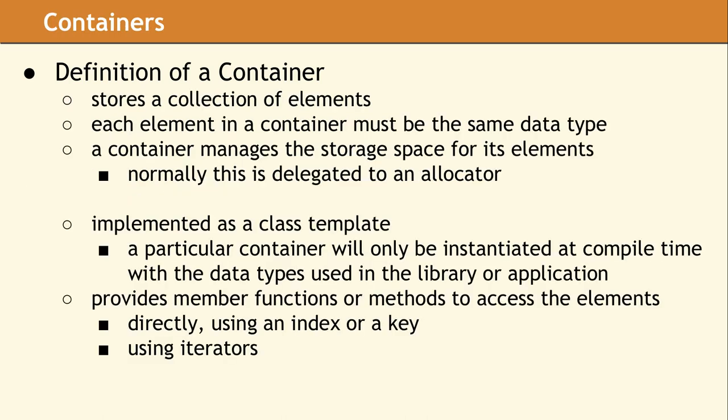The fundamental abstraction that containers provide is the ability to store a collection of elements. In C++ containers, each element in the container must be the same data type. The interesting part is that the container is responsible for allocating memory in proportion to the size of the data type it is storing. A lot of the power of a container comes from automatic memory management. Containers are implemented as a template, which means the container class should be written assuming as little as possible about the data types it will store.